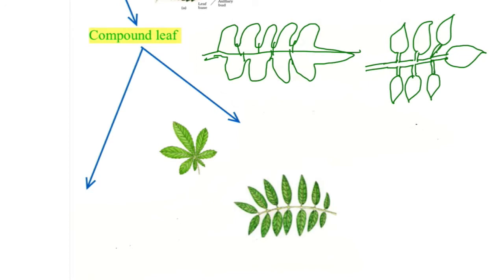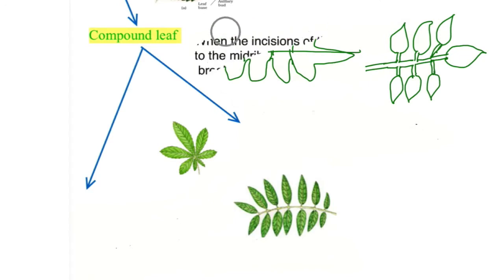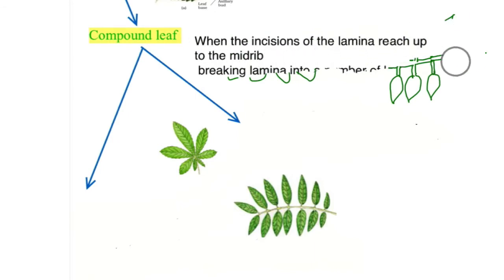In a compound leaf, the incision of the lamina reaches up to the midrib and the lamina breaks into a number of leaflets. There are two types of compound leaf. First: palmately compound leaf, where leaflets are arranged at a common point at the tip of the petiole. Second: pinnately compound leaf, where leaflets are arranged on a common axis called the rachis.